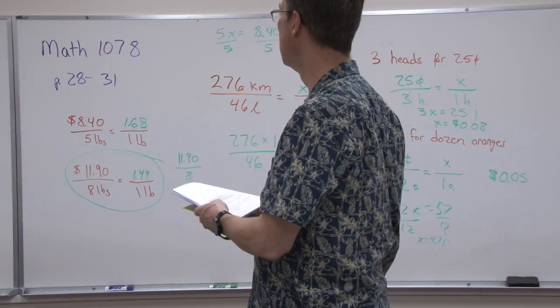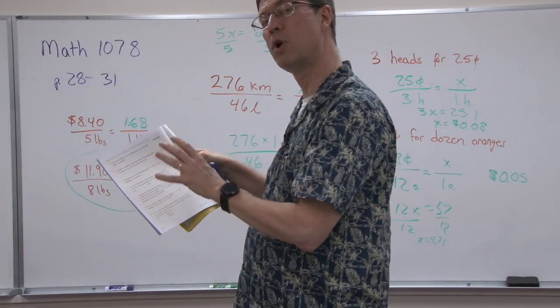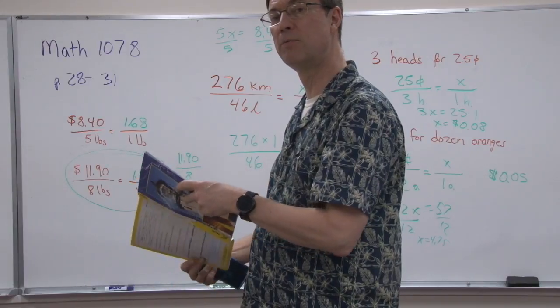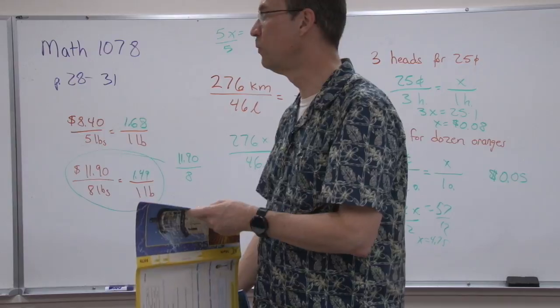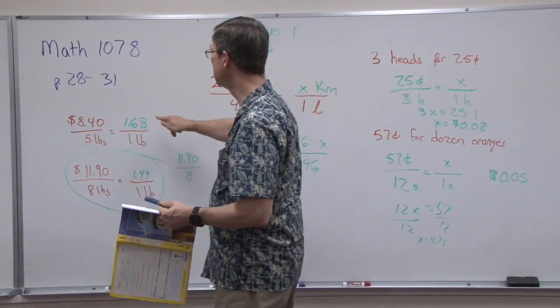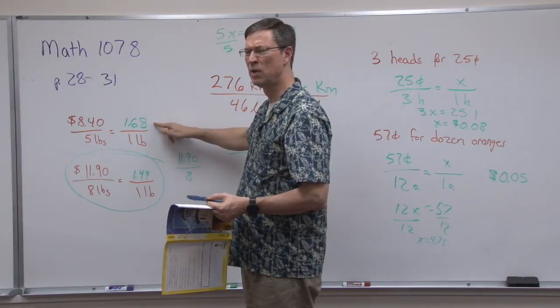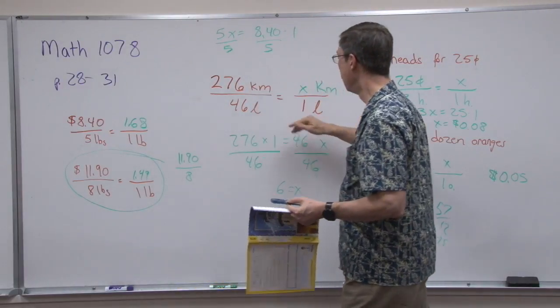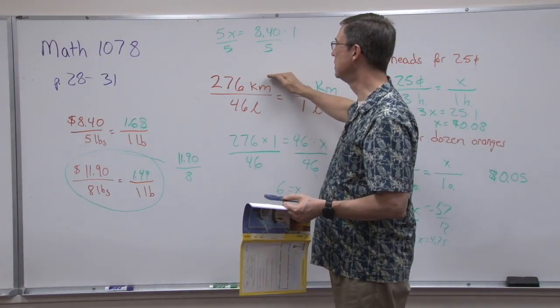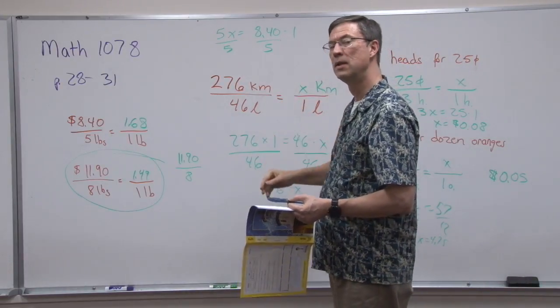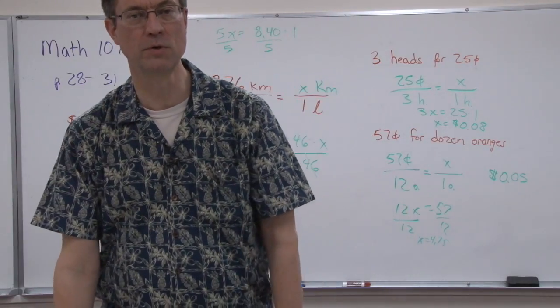But set them up first the way we did here, and then do the cross multiply, divide, and find the price. Remember the tip - always put the money on the top, and that will help you always figure out the price per pound. You don't want to end up with pounds per whatever. Put the money on the top, or on all of these we did the money on the top. Here was the distance over the liters used. We'll stop there and do another video in just a minute.